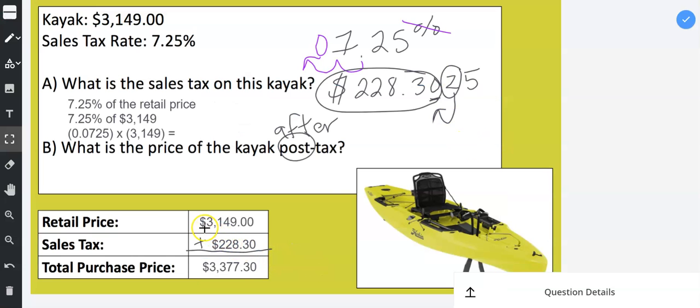All right. So the retail price was $3,149. The sales tax, $228.30. And the total purchase price was $3,377.30. After you add on the tax, you're going to have to pay to the government.